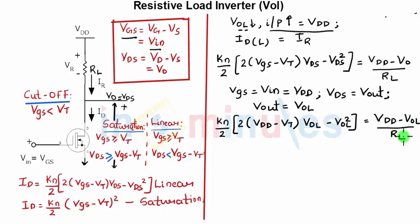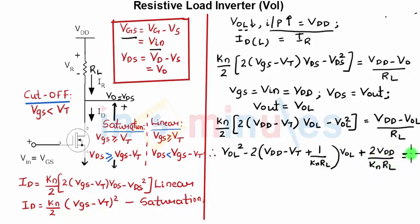Now if we simplify this equation one step further we get a quadratic equation which is as follows: VOL squared minus (2(VDD minus VT) plus 1 by KN RL) times VOL plus 2VDD by KN RL equal to 0.